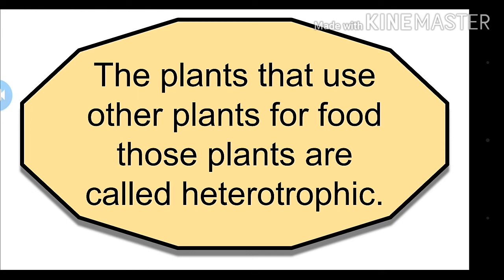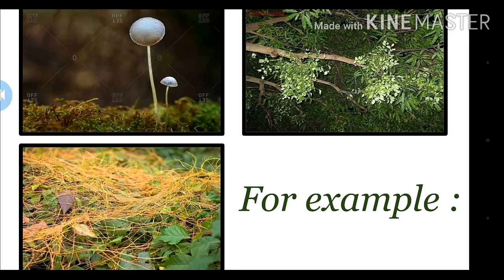Some examples of heterotrophic plants are: first, fungus; second, loranthus; and third, dodder. These all use other plants for their food, which is why they are called heterotrophic plants.